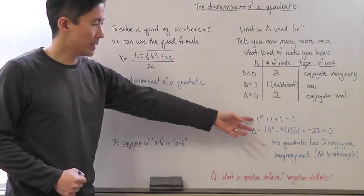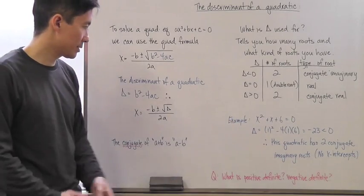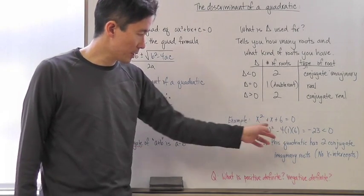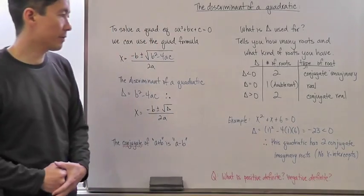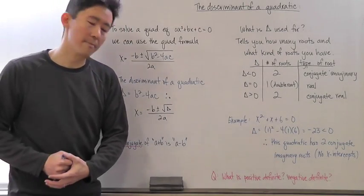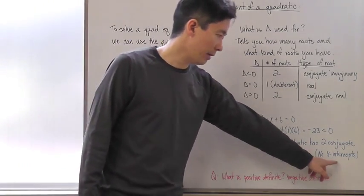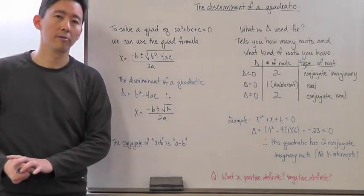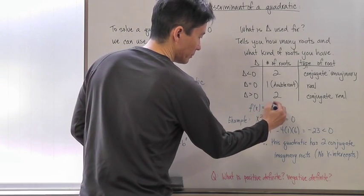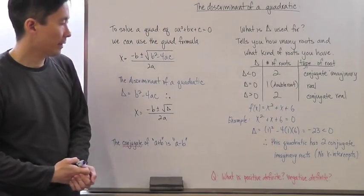Let's look at an example and determine the type and number of roots using the discriminant. The discriminant equals b² - 4ac, which comes out to 1 - 4(a)(c) = -23. Since -23 is less than zero, this quadratic has two conjugate imaginary roots, or equivalently zero real roots. This also means that if you graphed this function and looked for x-intercepts, you would find none.